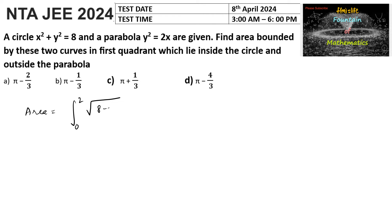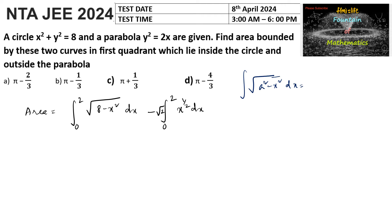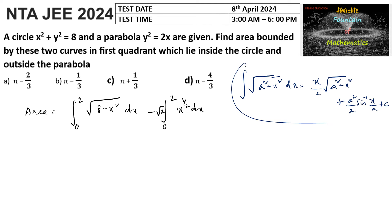This equals ∫₀² √(8 - x²) dx minus √2 ∫₀² x^(1/2) dx. We use the standard formula: ∫√(a² - x²) dx = (x/2)√(a² - x²) + (a²/2) sin⁻¹(x/a) + C, where here a = 2√2.